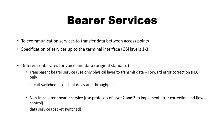Transparent Bearer Services use only the physical layer to do the transmission of data, and for error control and error detection and corrections, we make use of the forward error correction mechanism only. It makes use of the circuit switched network to do the transmission, and there is a constant delay and throughput. Whereas in Non-Transparent Bearer Services, it makes use of protocol layers two and three to implement error correction and flow control, and the data is being sent through the packet switched network.